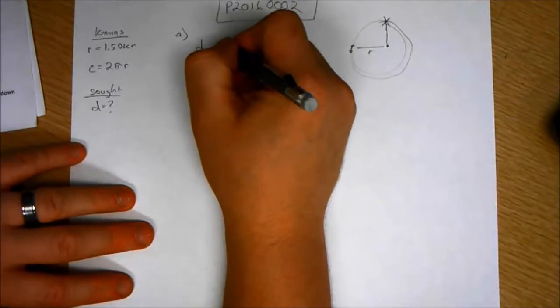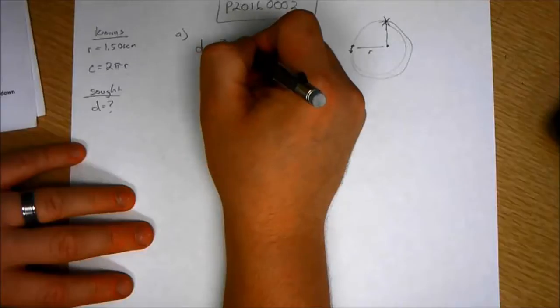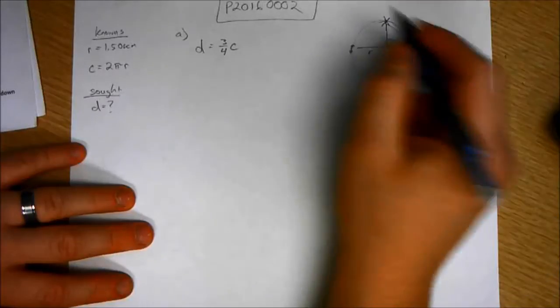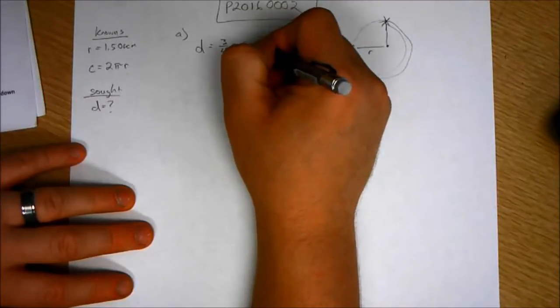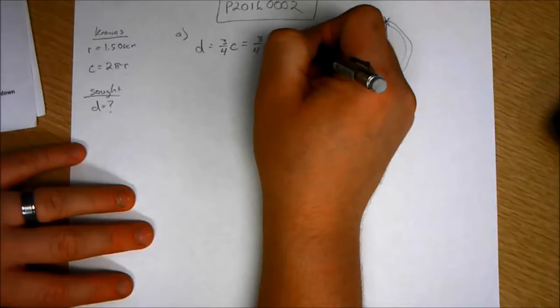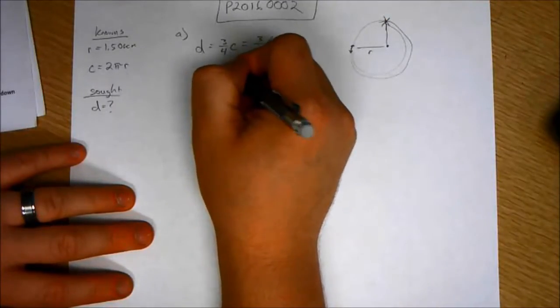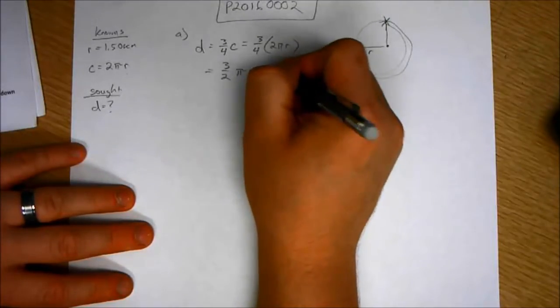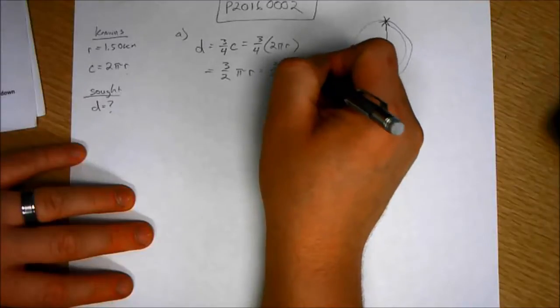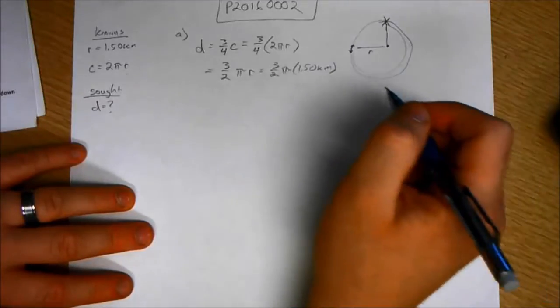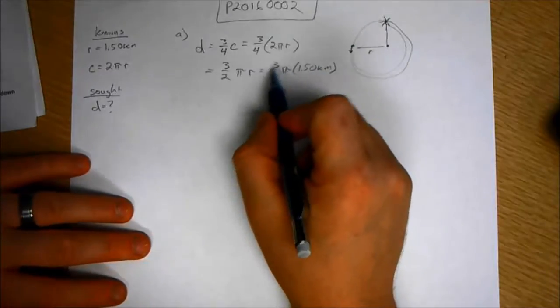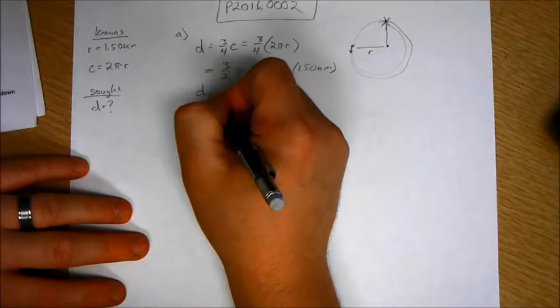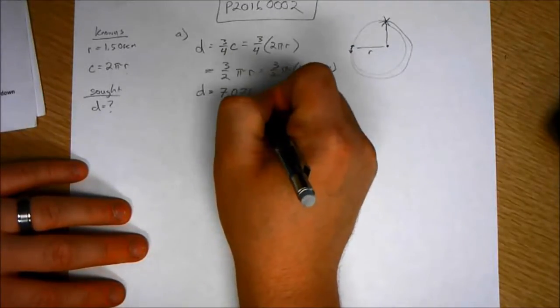So the distance they travel is going to be three-fourths of the way around, which is three-fourths of the circumference. The circumference of the circle, we know just from geometry, is equal to three-fourths times 2 pi r. And that equals three-fourths pi r, which equals three-fourths pi times 1.50 kilometers. I leave it in kilometers just because these are constants, so my answer will be in kilometers. If you have any doubt, convert to meters, that's fine. So the distance is 7.07 kilometers.